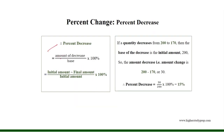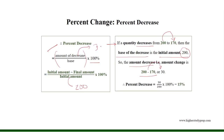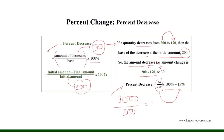The percent decrease equals the amount of decrease over the base — that is, the initial amount — times 100%. For example, if a quantity decreases from 200 to 170, then the base of decrease is the initial amount 200. The amount of decrease is 200 minus 170, which results in 30. So the percent decrease equals 30 over 200 times 100%, which results in 15%, where 3000 over 200 results in 15.